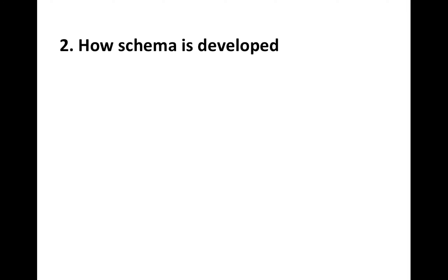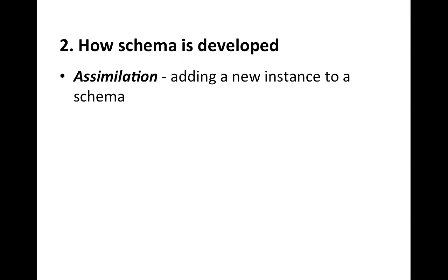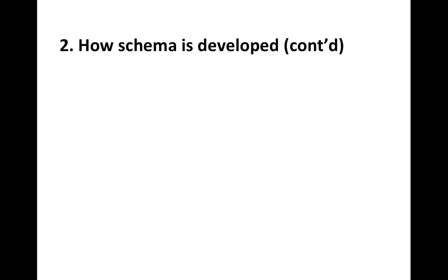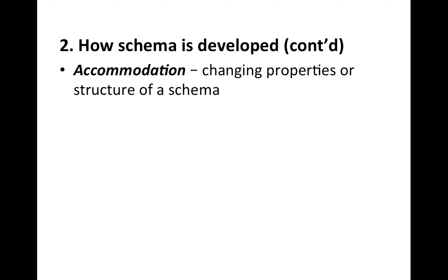Then how is schema developed? There are two processes: assimilation and accommodation. Assimilation occurs when a new learning instance is consistent with existing schema, so you can just add the instance to the schema — it is like adding a new file to a folder. For example, consider a schema of animals where you think mammals live on land. If you see lions for the first time, and lions live on land, you can just add lions under mammals.